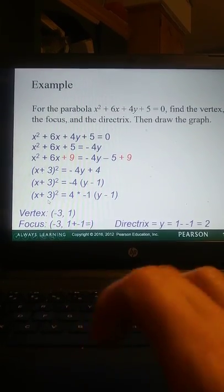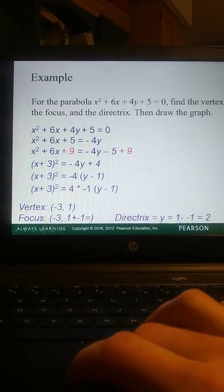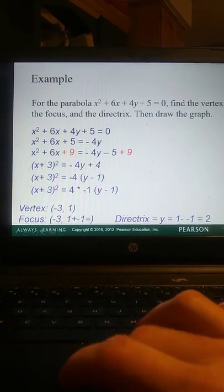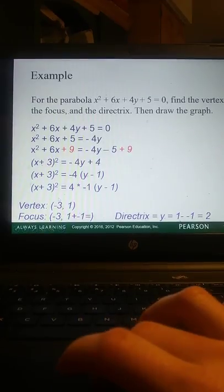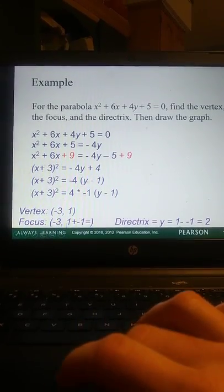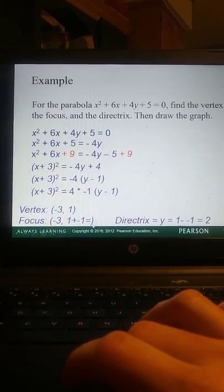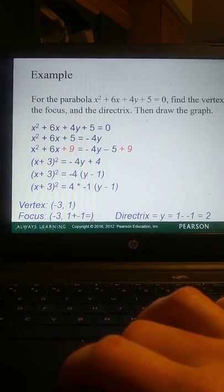So our H and K vertex is going to be negative 3, positive 1. Our focus will be negative 3. So since this is symmetric with respect to X, our axis of symmetry is going to be the line X equals negative 3. So our focus, the Y value would change. We would have 1 plus a negative 1 equals, this is a misprint, that should be 0. Then our directrix is the line Y equals 1 minus a minus 1, which gives us 2.